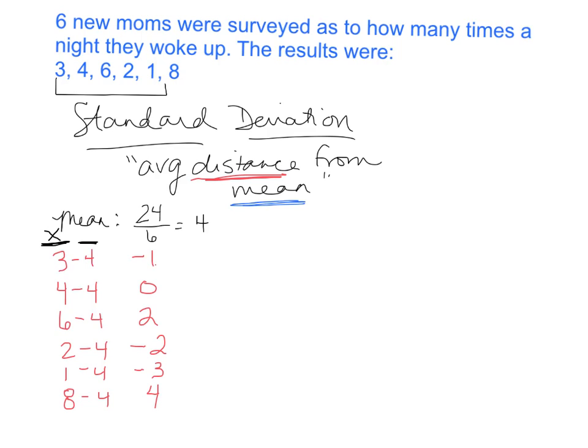If I want to get an average, it's add them up and divide by how many there are. However, the problem with this list is if I add the distances — negative one, plus two, minus two, minus three, and plus four — I get zero. That's not my average distance; the positives and negatives cancel each other out, so I can't just add this list and divide by six.